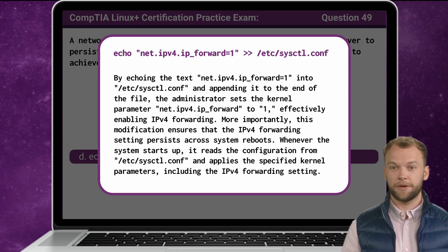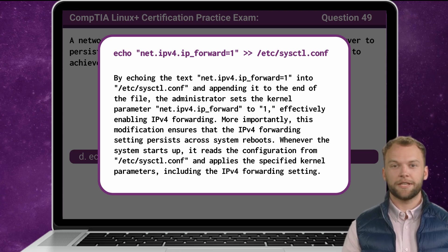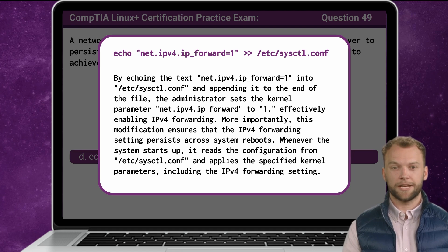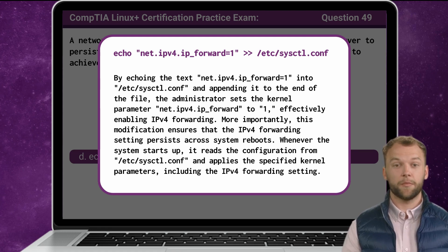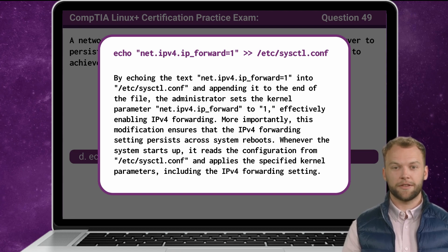By echoing the text net.ipv4.ip_forward=1 into /etc/sysctl.conf and appending it to the end of the file, the administrator sets the kernel parameter net.ipv4.ip_forward to 1, effectively enabling IPv4 forwarding. More importantly, this modification ensures that the IPv4 forwarding setting persists across system reboots. Whenever the system starts up, it reads the configuration from /etc/sysctl.conf and applies the specified kernel parameters, including the IPv4 forwarding setting.